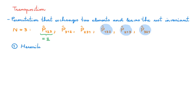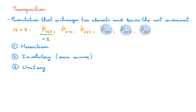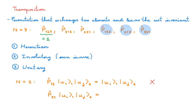Transpositions have some nice properties. First, they are Hermitian. Second, they are involutory, which means that they are their own inverses. And third, combining the first two properties means that transpositions are unitary. To prove these three properties, we're going to use the simplest possible transposition as an example, coming from a two-particle system with n equals 2. For n equals 2 we only have two possible permutations: P12 and P21. P12 is the identity, so it is not a transposition. P21 is the operator that exchanges the two particles, which means it is a transposition. We're going to use P21 as an example transposition to prove these general properties.